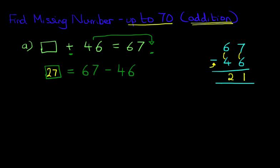21 equals 67 minus 46. So we can write this in the original question: 21 plus 46 equals 67. And this is a nice useful method. Now let's have a look at our second example.